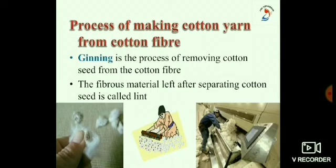Now we have the cotton balls. From here, the story of making cotton yarn from cotton fiber begins. We know that we obtain cotton fibers from the fruit of the cotton plant. So we have to separate the seeds from the cotton fiber which are present in the cotton balls. This process is called ginning. Ginning is the process of removing cotton seeds from the cotton fiber.